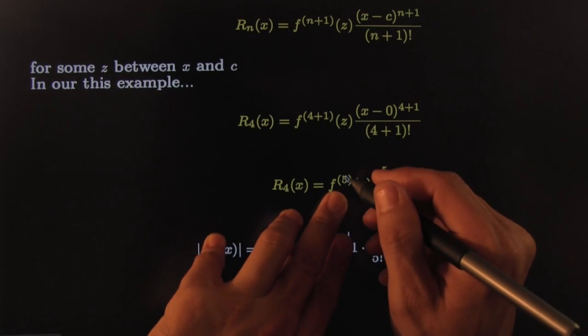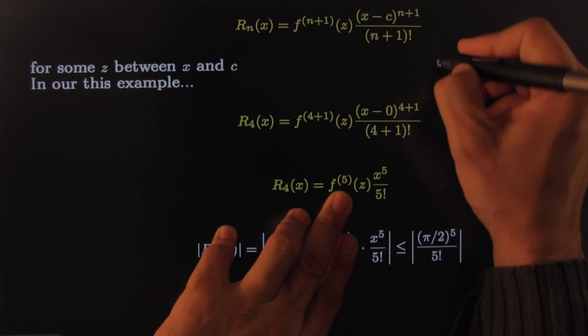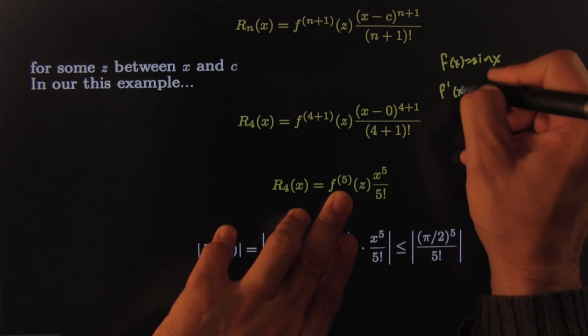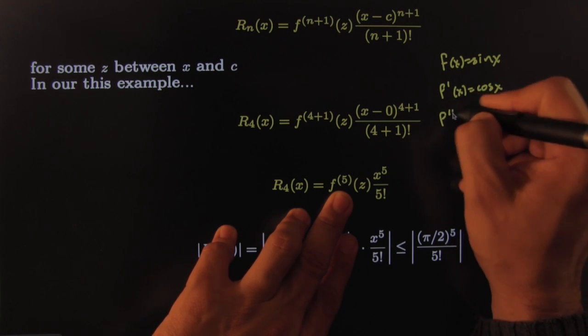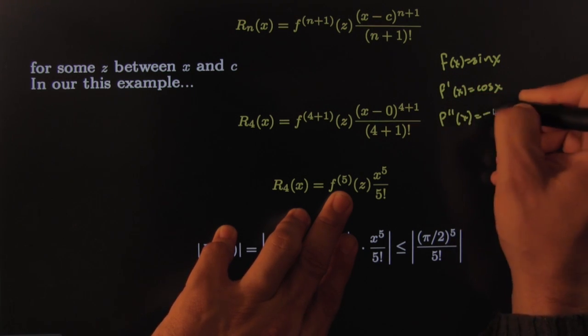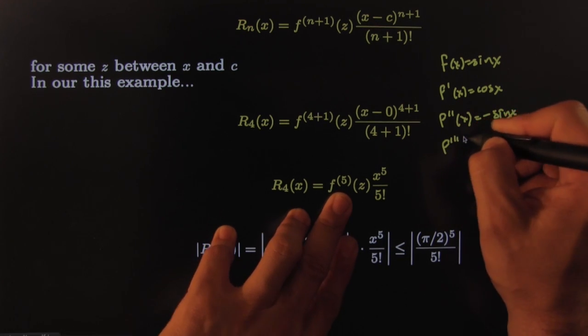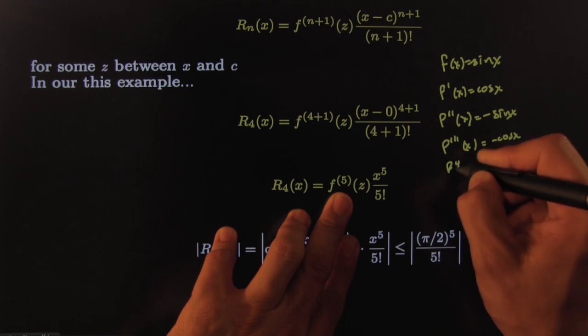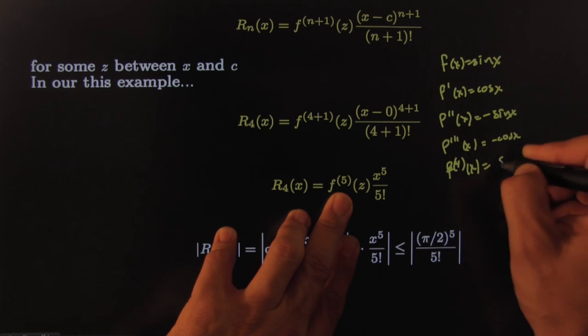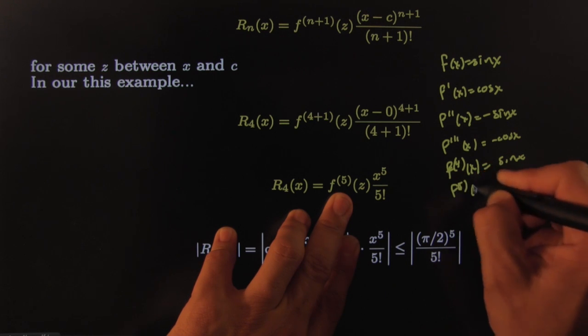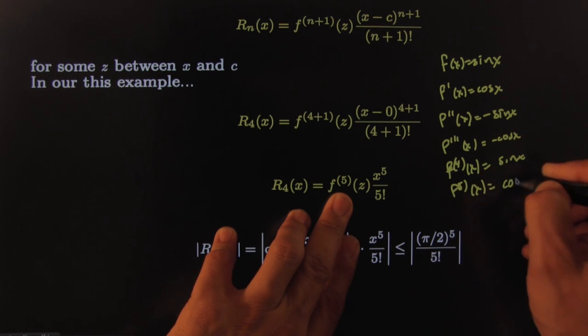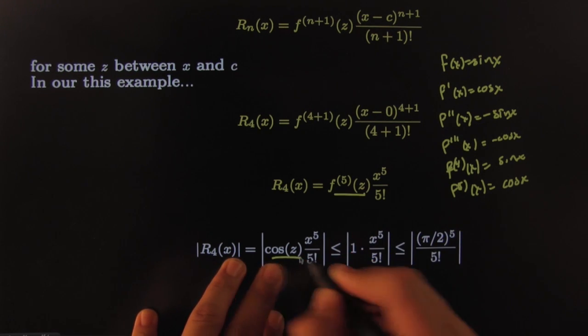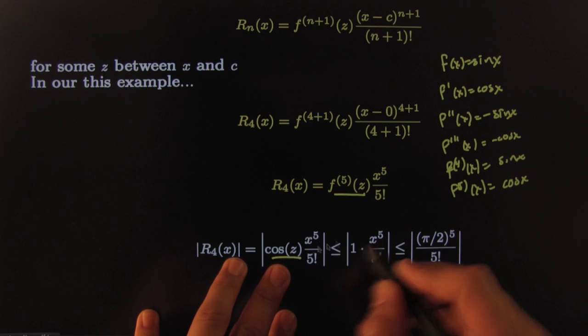And now I want to know how bad can that get. Well let's figure out the fifth derivative. I know that the function was sine of x, so the first derivative would be equal to cosine of x. I know that the second derivative would be the derivative of the cosine, which would be negative sine of x. I know that the third derivative would be the derivative of that, which would be equal to negative cosine of x. I know that the fourth derivative would be equal to the derivative of that, which would be sine of x. And I know that the fifth derivative would be the derivative of that, which would be cosine of x. So the fifth derivative, this guy, is equal to cosine.